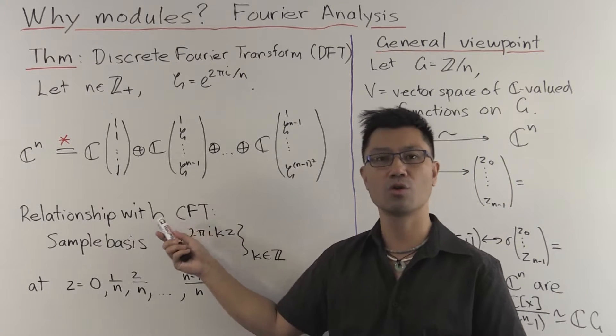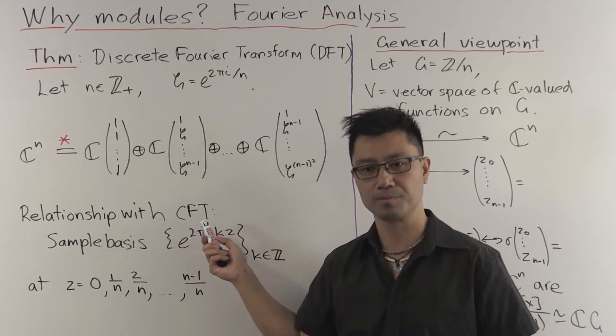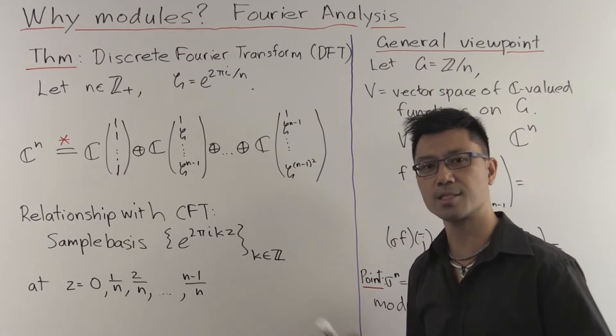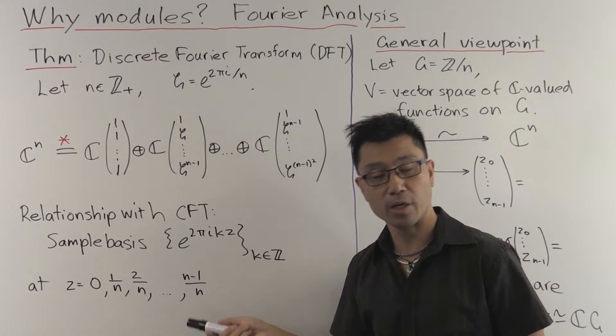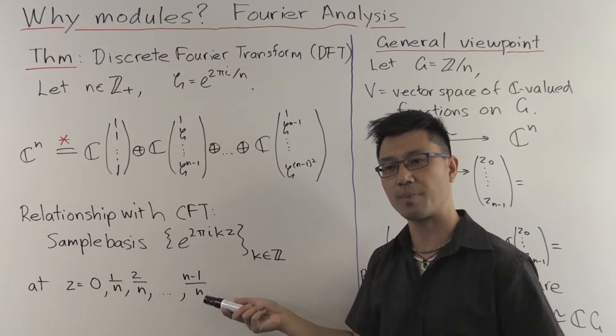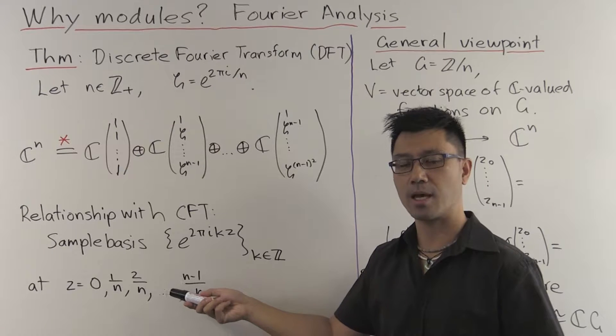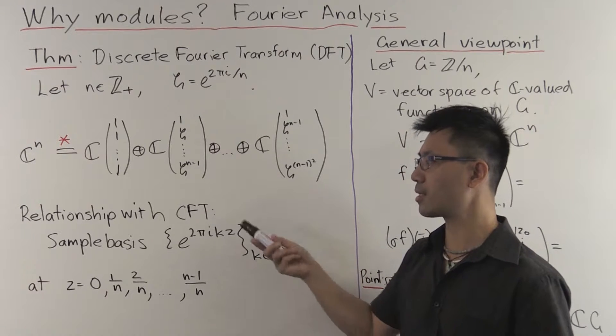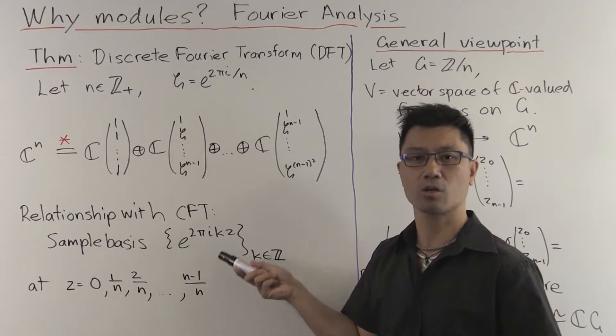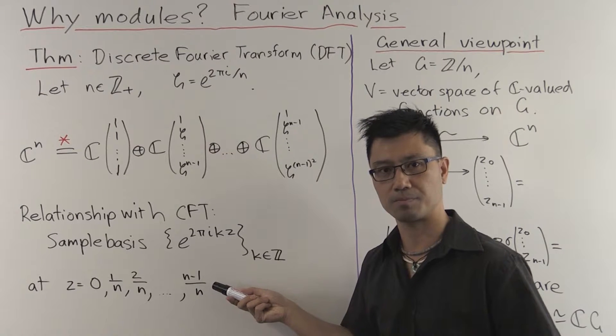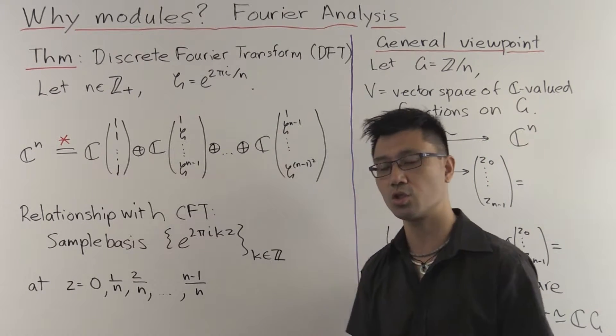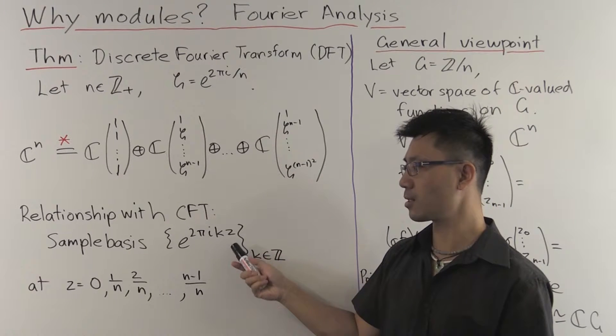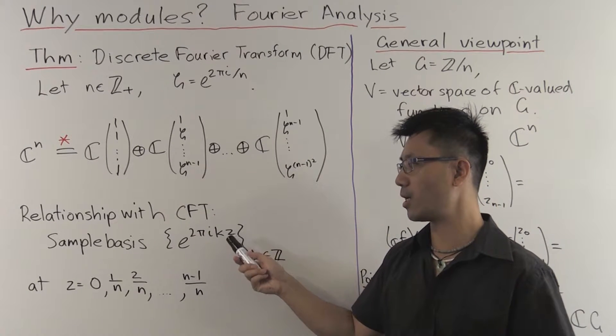So how is this related to the usual Fourier series that you've seen in the continuous case? Well, in that case, what you want to do is look at periodic functions instead and the space of them, and it has a basis in an appropriate sense consisting of these complex exponential functions. Now, if you want to convert this into a discrete situation, what do you do? You need to sample this at discrete values of z.